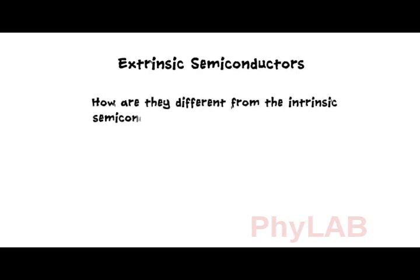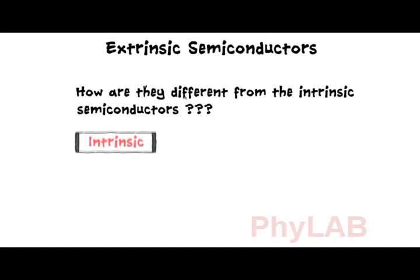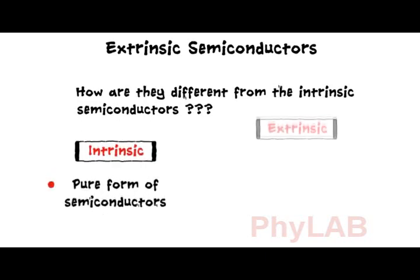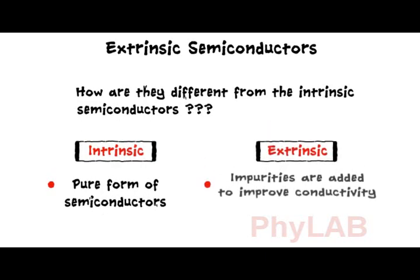So let's understand the second type of semiconductors which are extrinsic semiconductors. How are they different from the intrinsic semiconductors? While intrinsic are the pure form of semiconductors, impurities need to be added to the intrinsic to improve their conductivity. And these semiconductors with impurities are called extrinsic semiconductors.